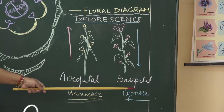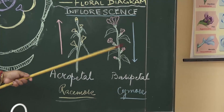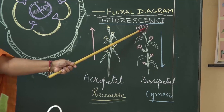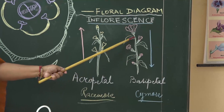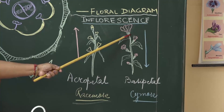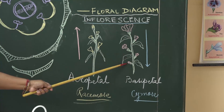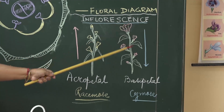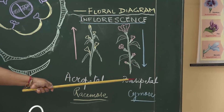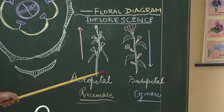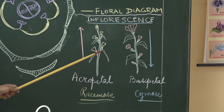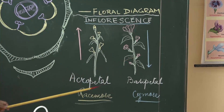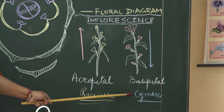The other category is known as cymose. Here the tip of the shoot ends up in a flower, so the growth of this shoot becomes limited and the newer flowers are towards the base. The mode of blossoming is from the tip towards the base, and hence we call it basipetal. The main difference is that in racimose, growth is from base to apex, whereas in cymose, it is from apex to base. These are the two main types of inflorescence you should know.